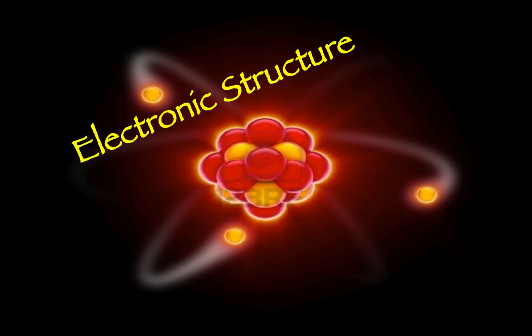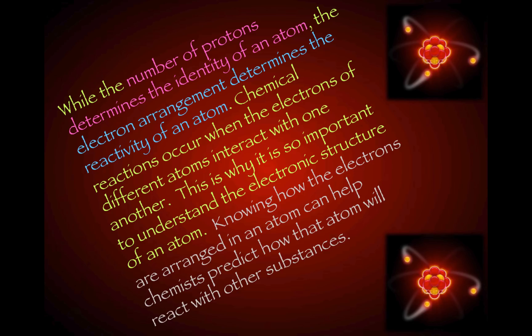While the number of protons determines the identity of an atom — every element has a unique atomic number and a certain number of protons in its nucleus — the electron arrangement determines the reactivity of an atom. Chemical reactions occur when the electrons of different atoms interact with one another. This is why it is so important to understand the electronic structure of an atom.